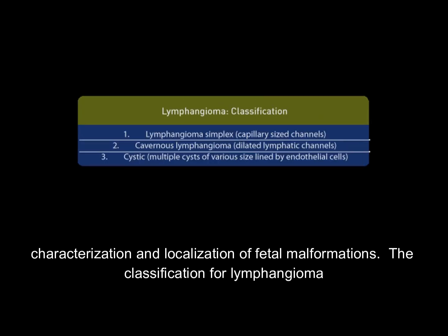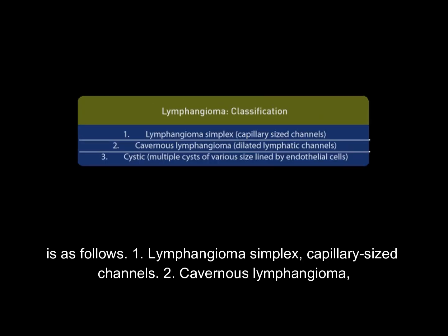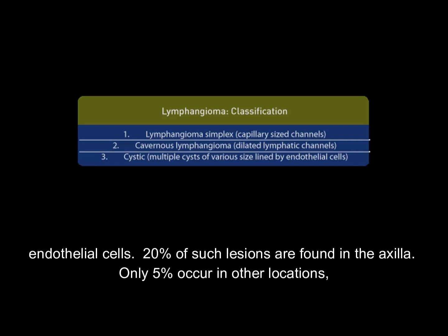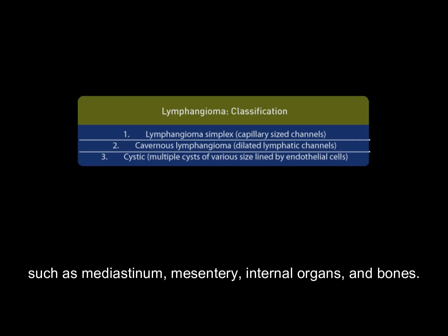The classification for lymphangioma is as follows: (1) Lymphangioma simplex — capillary-sized channels; (2) Cavernous lymphangioma — dilated lymphatic channels; and (3) Cystic — multiple cysts of various sizes lined by endothelial cells. 20% of such lesions are found in the axilla. Only 5% occur in other locations such as the mediastinum, mesentery, internal organs, and bones.